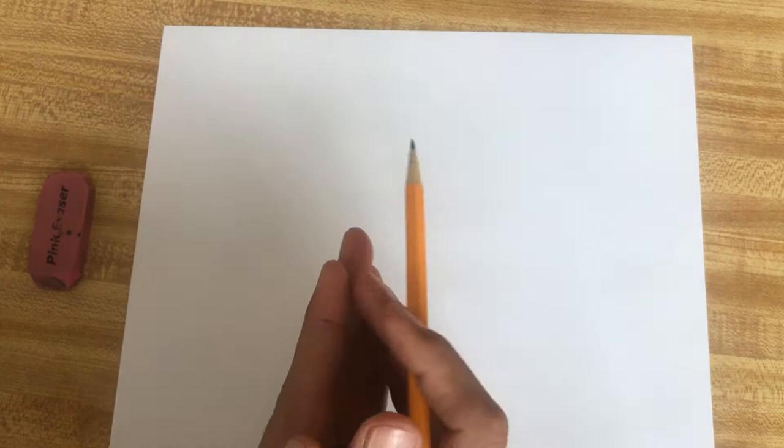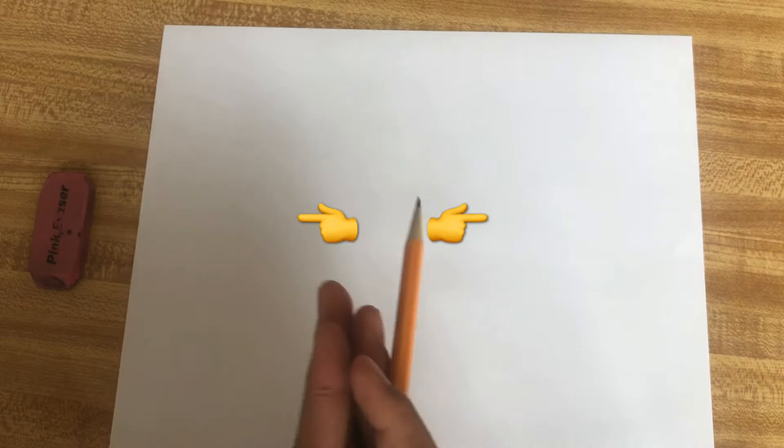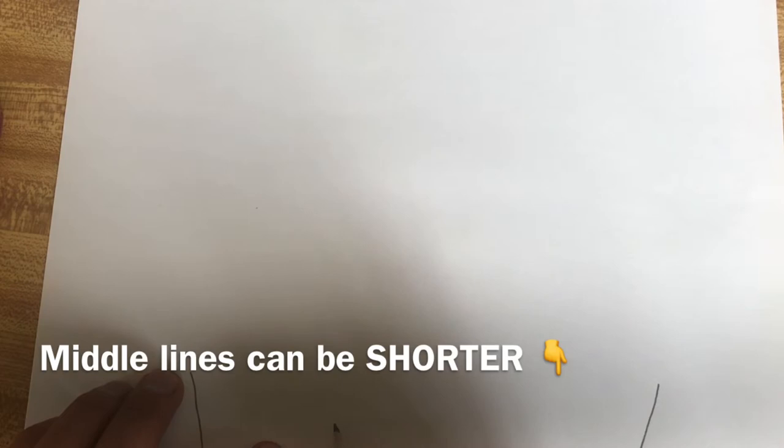So on the bottom here, I'm going to start with one line on this side, one line on this side, and then in the middle, I'm going to have one more, another one on this side. Maybe if you want to angle those out a little bit, I think that works pretty good.